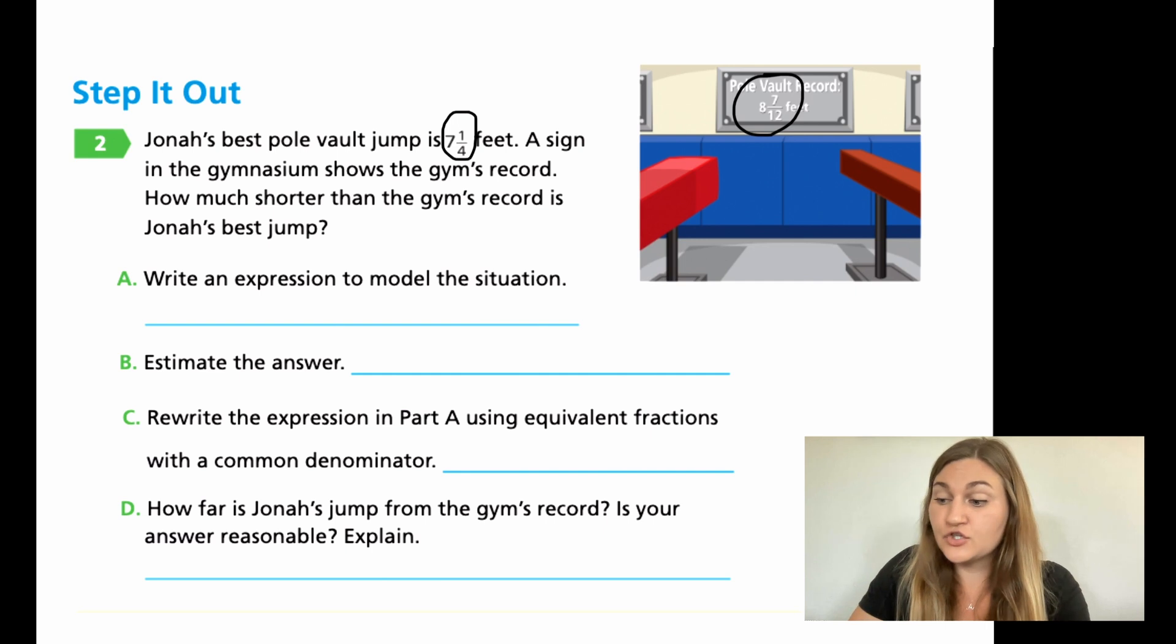So if we're comparing Jonah's jump to the gym record, we do need to be subtracting. For A, you're just writing the expression. B, estimate your answer. C, rewrite using equivalent fractions with common denominators. And then D, write your actual answer. Is your answer reasonable and explain? You're doing three things in D. Go ahead and try these four questions and then come back so we can work it out together.